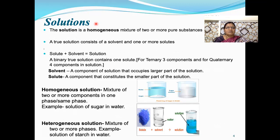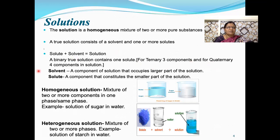A true solution consists of a solvent and one or more solutes. Depending upon the number of solutes, the solution may be binary, ternary, or quaternary. Binary means two components: one solvent and one solute. If three components are present — one solvent and two solutes — it is ternary. If there is one solvent and three solutes, the solution is known as a quaternary solution. In this chapter, we are studying the binary true solution. A solvent is the component that occupies the large or major part of the solution.